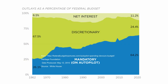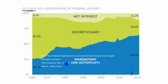This is a similar diagram that shows the breakdown of outlays by the federal government from 1962, including projected outlays, to 2020. At the time of this video we are in 2017, and this chart was made in 2016. You can see a couple of big categories.